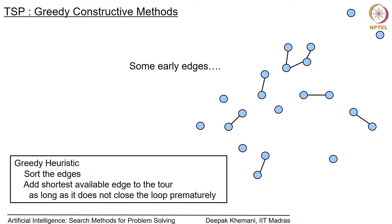For the greedy algorithm, this diagram shows some of the early edges added to the tour. The heuristic is to add the shortest edge you can add. For example, the next edge added might be a short one, then perhaps another, but if adding an edge would give a node three edges, you must skip it. Continuing in this way, you construct a reasonably good tour, but it may not be the best possible tour.